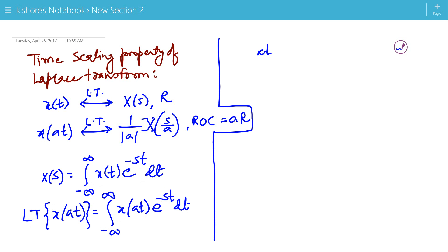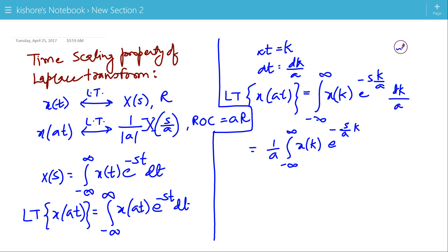Now replacing A into T by K, so dt is replaced by dk by A and there is no change in the limits because limits are minus infinity to plus infinity. So integration of x(k) e to the power minus S, T is replaced by K by A, dt is replaced by dk by A. So this one is 1 by A integration of x(k) e to the power minus S by A into K, dk, which is Laplace Transform of x(at).